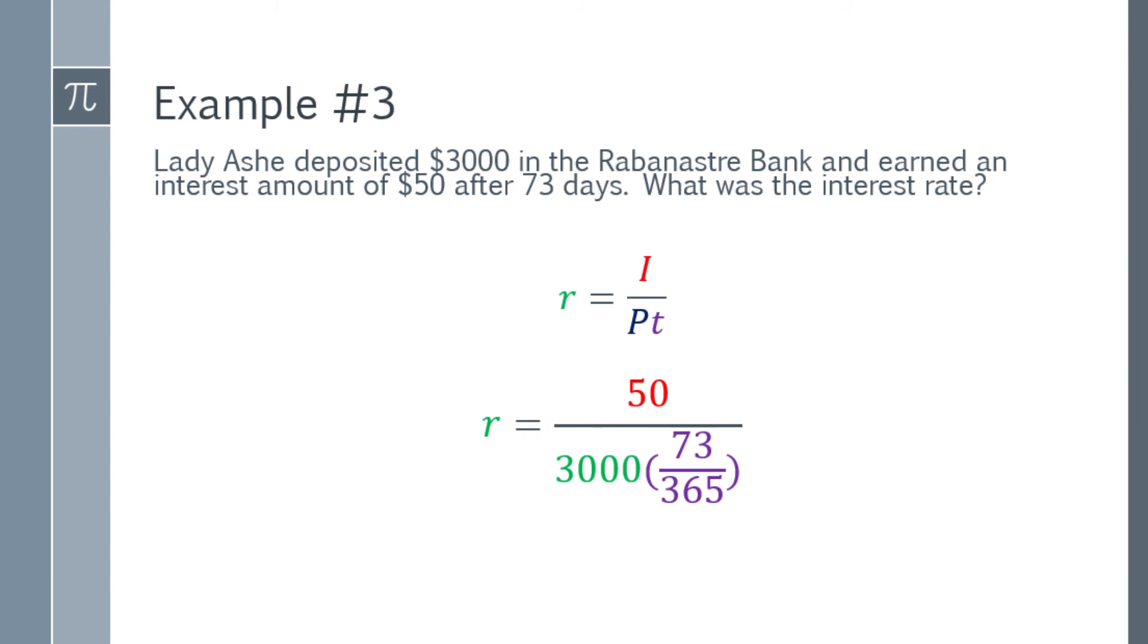Okay, bakit 73 over 365? Remember, in one year, we have 365. Ignoring Lipir, ha? So ang given mo ay 73 days, so that will be 73 over 365.